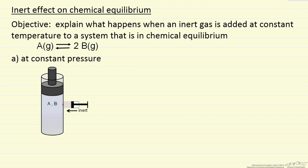We can look at this from Le Chatelier's principle. Adding an inert at constant pressure is going to lower the partial pressures of A and B, because the total pressure is constant and the inert has some pressure. We've lowered those pressures, so the system is going to want to respond to make more moles. More moles will try to increase the pressure, so the system is going to go to the right to increase the pressure.